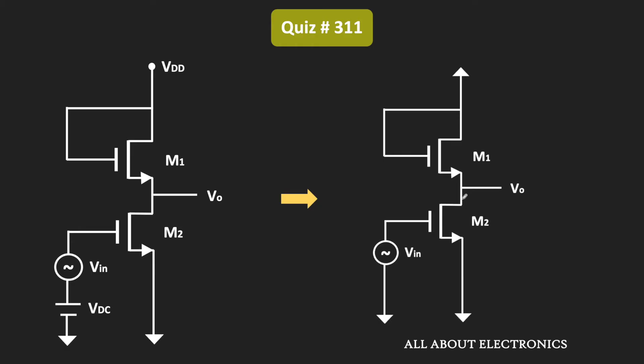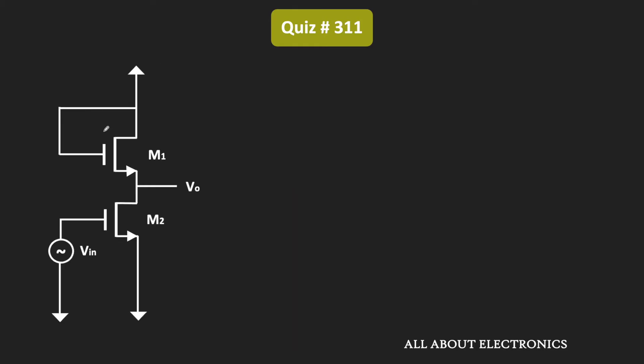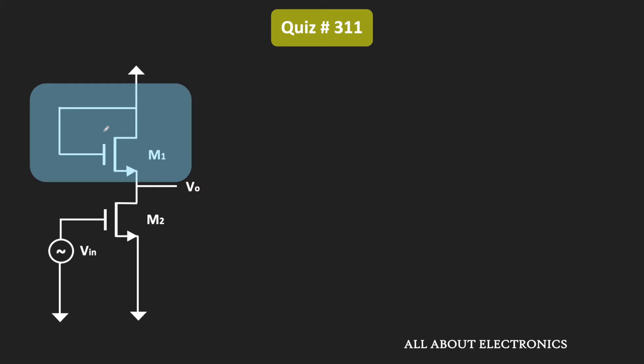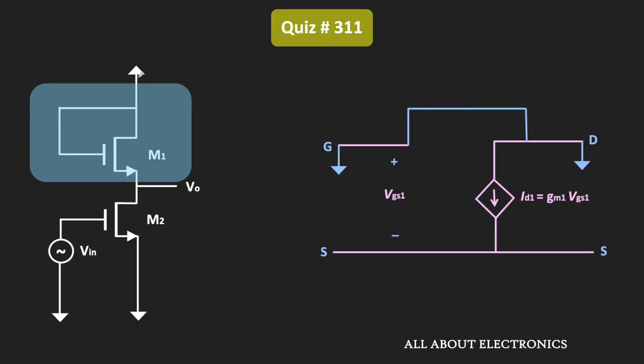Now let us replace these two MOSFETs M1 and M2 by the small signal equivalent circuit. First, let us replace MOSFET M1. If you observe, the drain and the gate terminal are connected together, and the drain terminal is connected to the ground terminal. In the equivalent circuit, it can be represented like this.